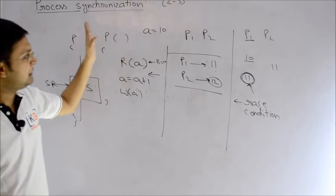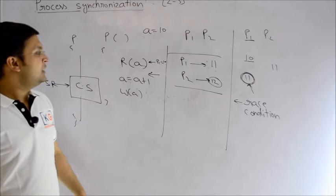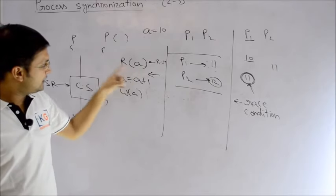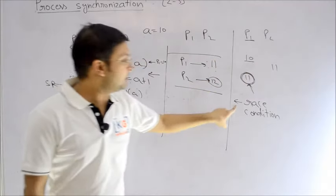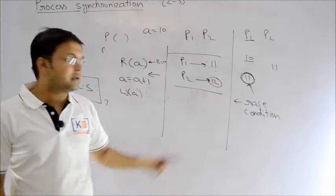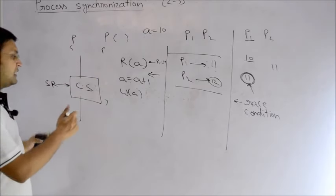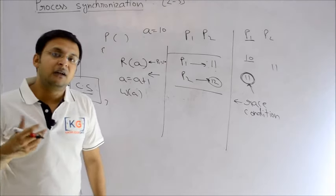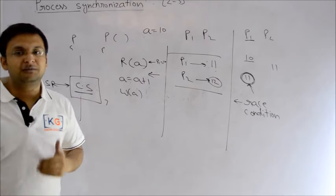To summarize: process synchronization is required because multiple processes are involved in the system and these processes access shared resources. If they access them one by one there is no problem, but if they access them simultaneously — in a mixed fashion — the system can give inconsistent results, which is called a race condition. The area in which a process accesses shared resources is called the critical section. In the next lecture, we will discuss the criteria and standard solutions for the critical section problem.